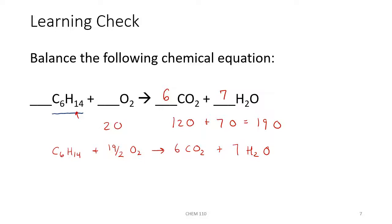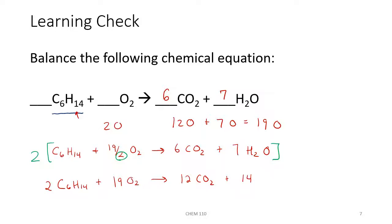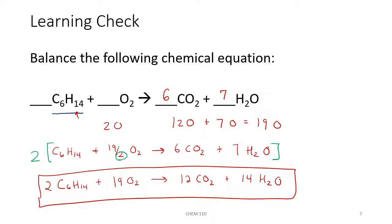We can't leave fractions in our final equation, so we multiply everything through by 2 to cancel the denominator. Our balanced equation becomes 2C6H14 + 19O2 → 12CO2 + 14H2O. Using fractions is a trick when you have an odd number that you can't balance with a whole-number coefficient on a diatomic element such as O2, H2, or Cl2 — use a fraction, then figure out what to multiply through by to get rid of it.